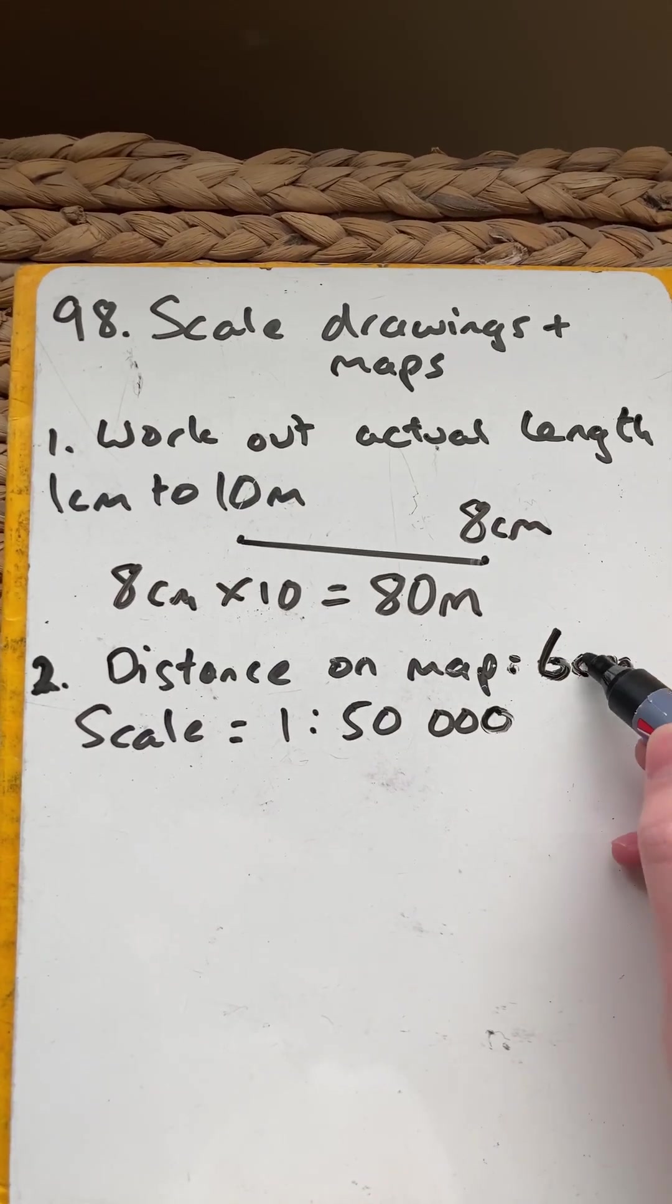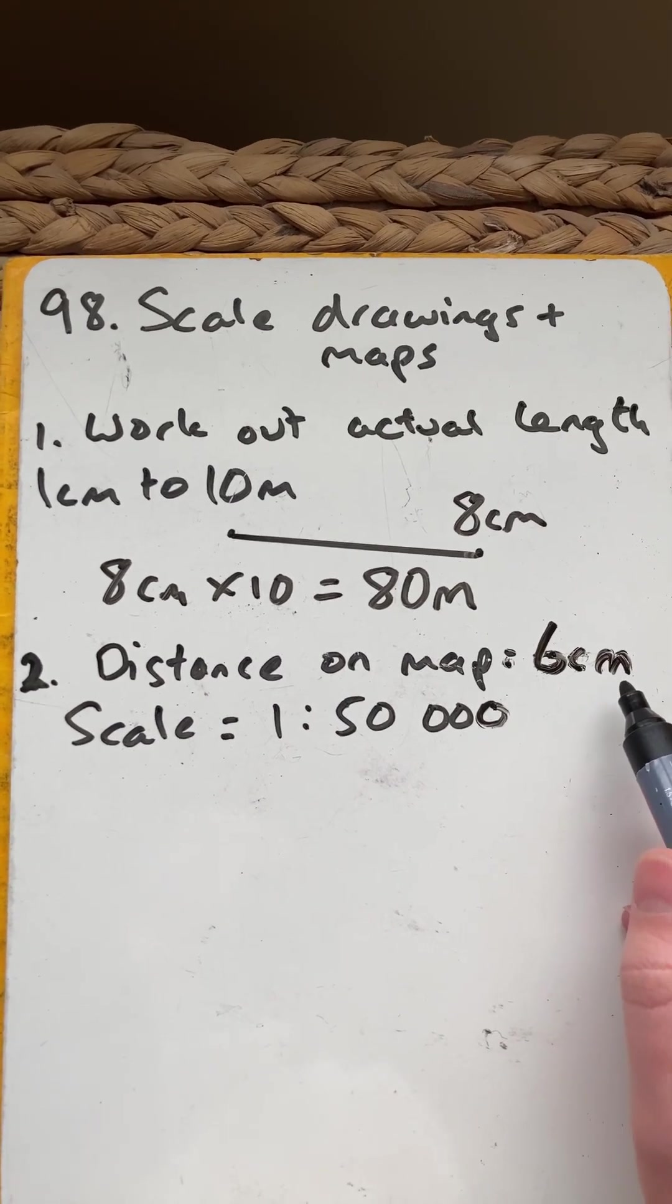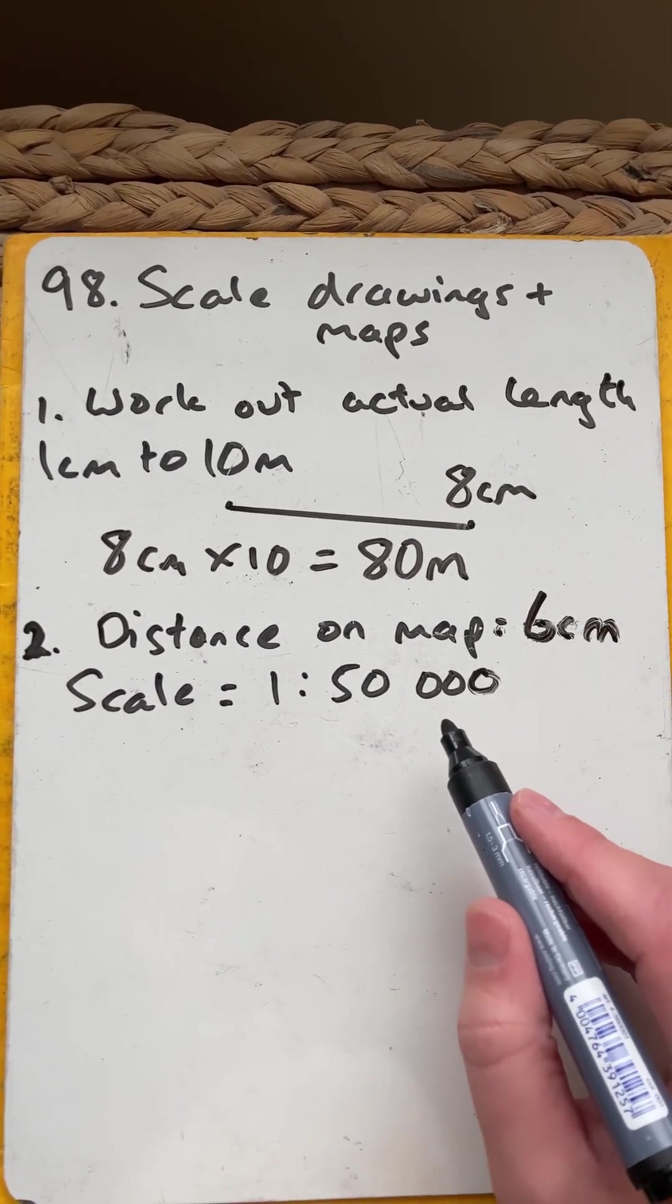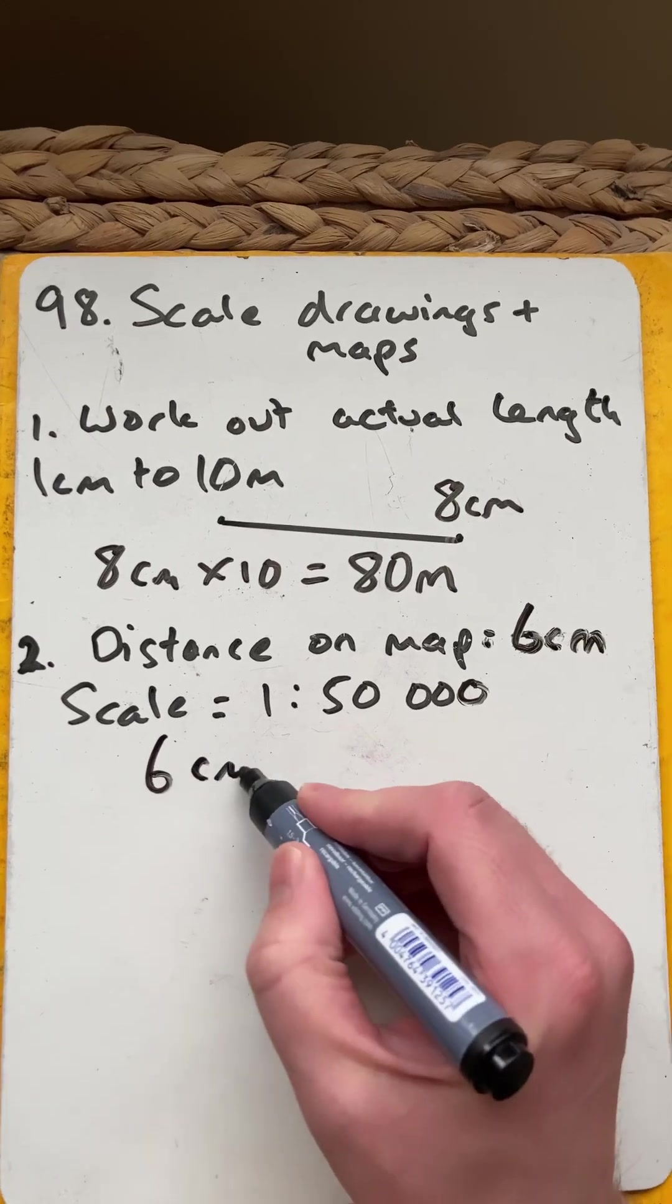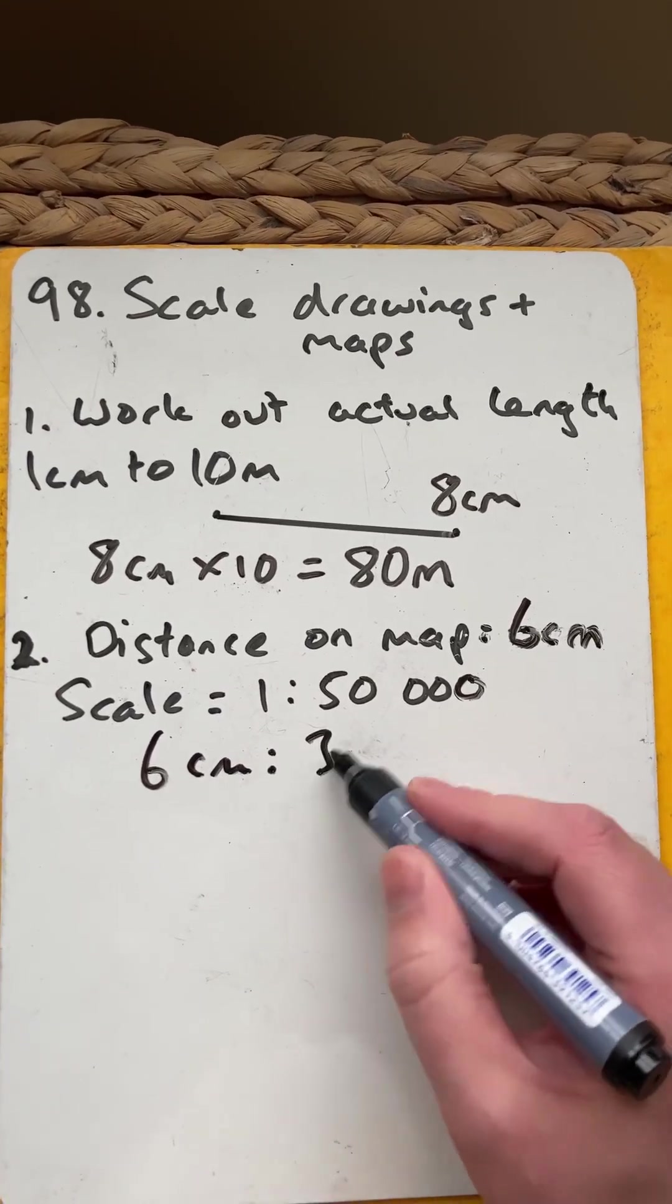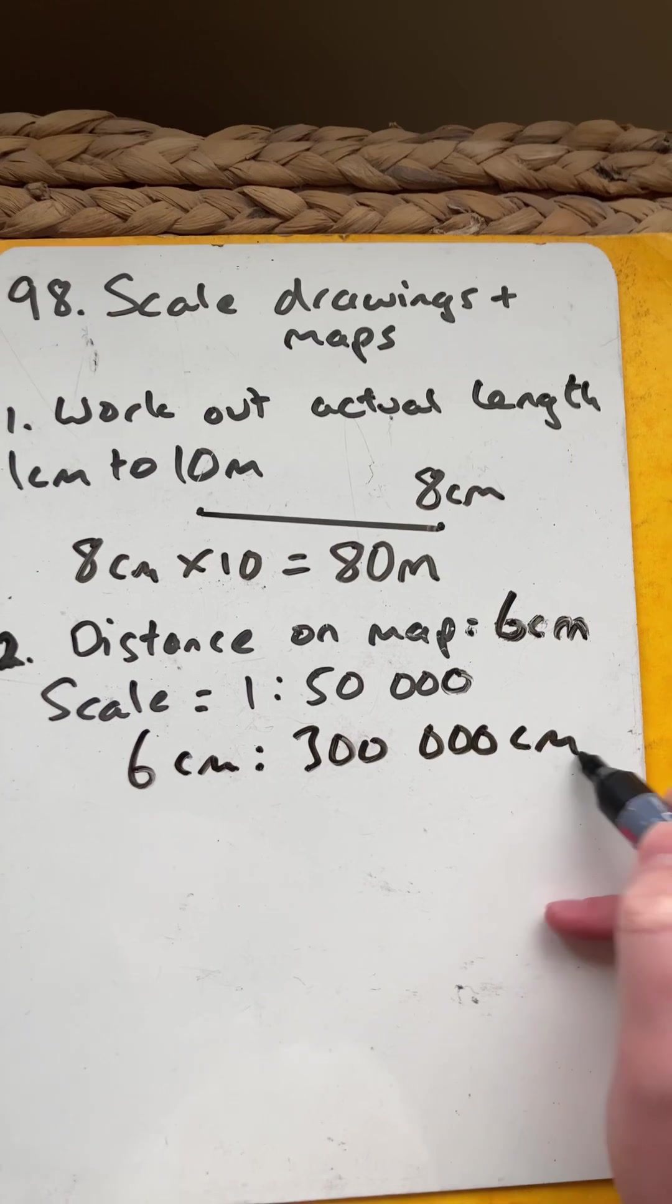So I've measured a part of the map to be 6 centimetres, and I want to know what that is in real life. So 6 centimetres will now represent 300,000 centimetres.